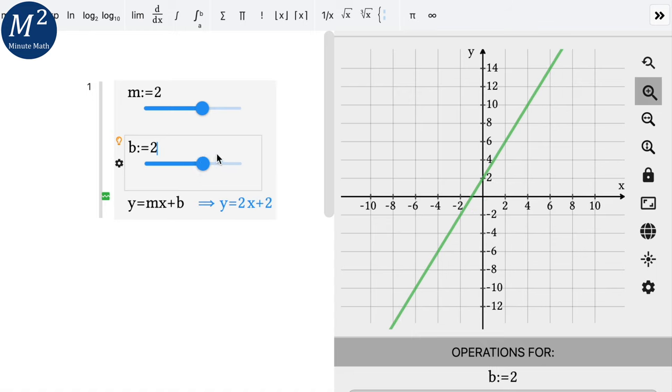So notice here we have an equation y equals 2x plus 2. Our y intercept is 2. It crosses the y axis at 2. And then our slope is a positive 2. We go up two units over one, one two over one, one two over one, one two over one. That rise over run.